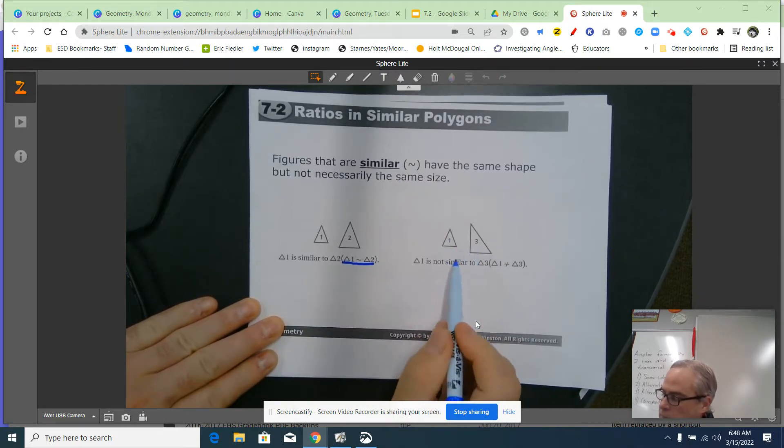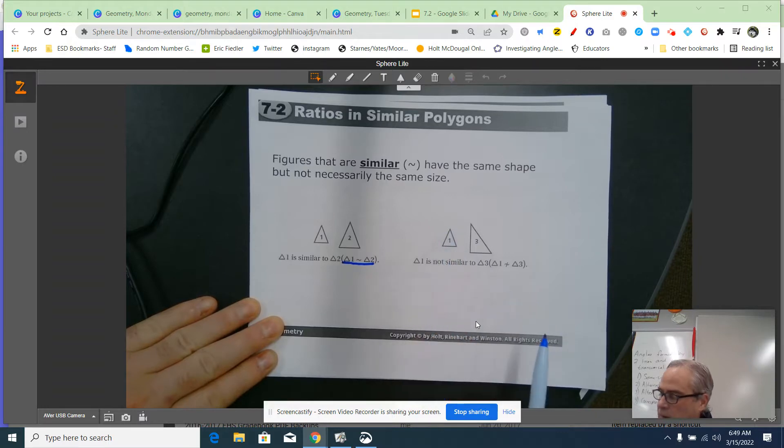These two would not be similar. If you notice, they are both triangles, but their shapes are different. This one looks more like a right triangle, and this one looks more like an isosceles triangle that doesn't have a right angle in it.